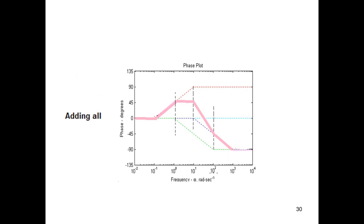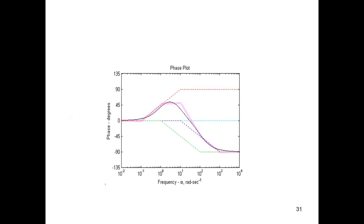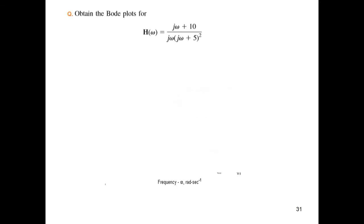Adding the phase components: up to the first region it is 0, then there is a positive slope. Then the positive and negative slopes cancel, giving a straight line. After that, we have a minus 90 slope and another minus 90 slope, so adding the two gives a minus 180 slope — for one decade the slope is now 180 degrees, steeper than the previous ones. Rounding off the corners gives us the final phase plot for this transfer function.